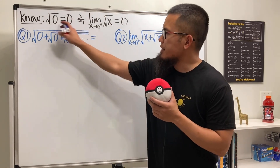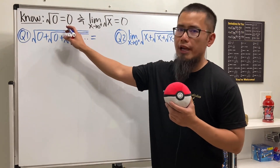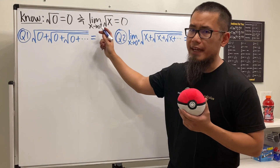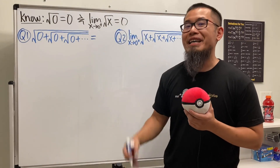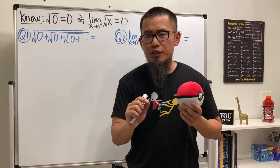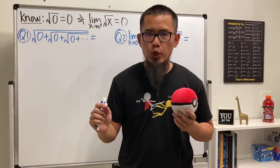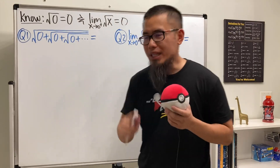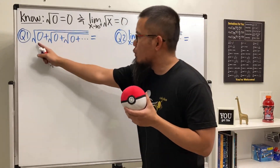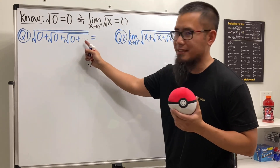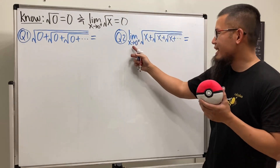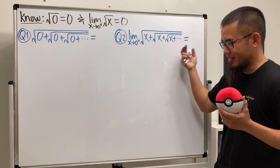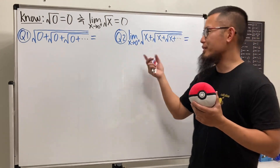As we all know, the square root of zero is equal to zero, and the limit as x approaches zero from the right of √x is also equal to zero — in fact this shows √x is continuous when x equals zero. But now, have you ever thought about what if we have √(0 + √(0 + √0 + ...)), and the limit as x approaches zero from the right of √(x + √(x + ...))?